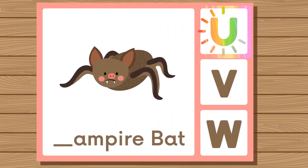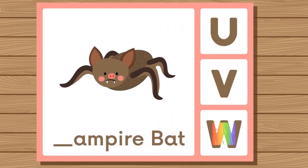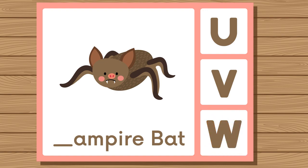Does vampire bat start with U, V, or W? Vampire bat. Vampire bat starts with V.